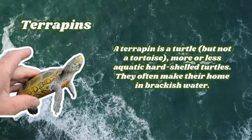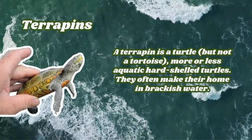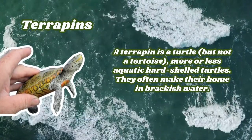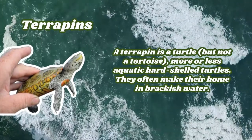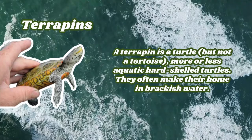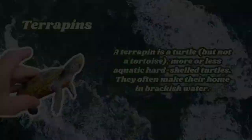Now let's cover what a terrapin is. A terrapin is a turtle but not a tortoise — it is more or less a hard-shelled aquatic turtle. They often make their home in brackish water. Terrapins don't actually form a specific taxonomy, which means all members may not actually be closely related.